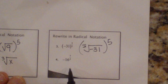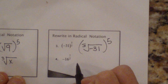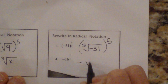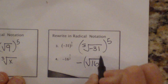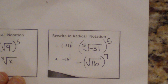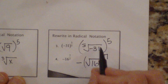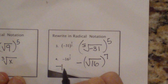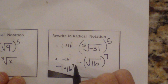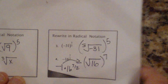Now how is that different than this one? Notice there's no parentheses. So I'm going to take a negative square root of 16 to the seventh power — that negative is on the outside. When it's inside the parentheses, it's in the radical. When it's not, it's basically saying negative 1 times 16 to the 7 halves, so that negative 1 is on the outside.